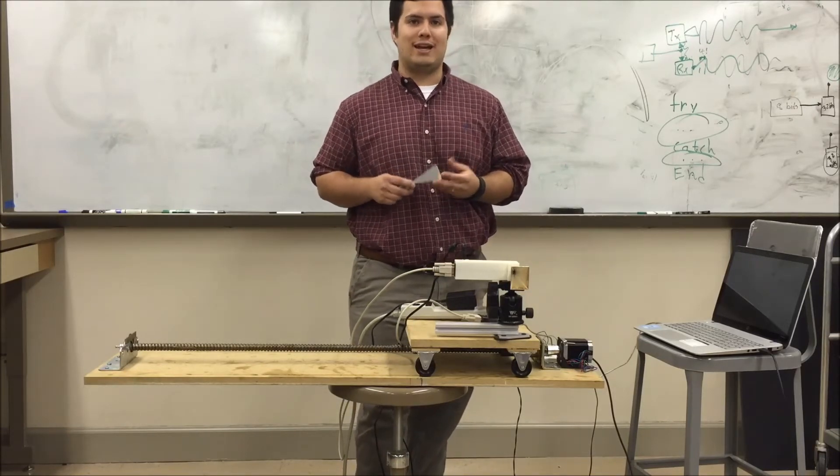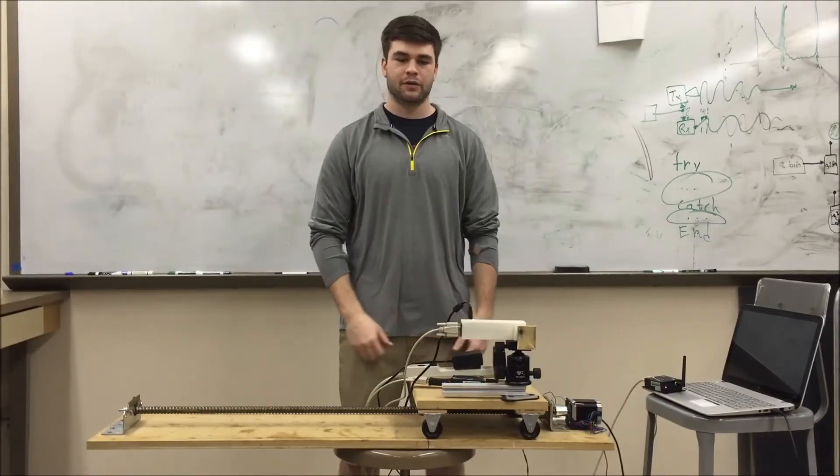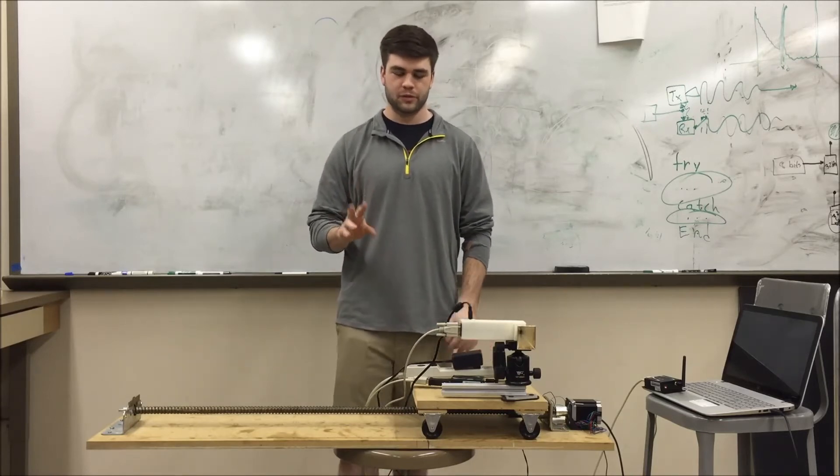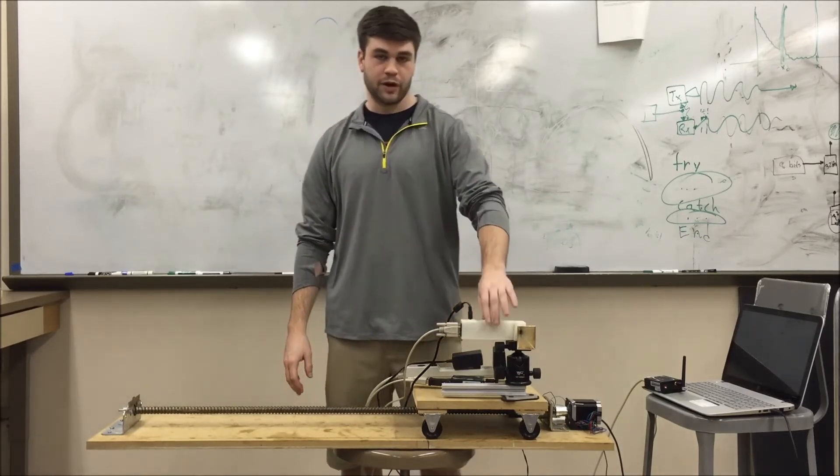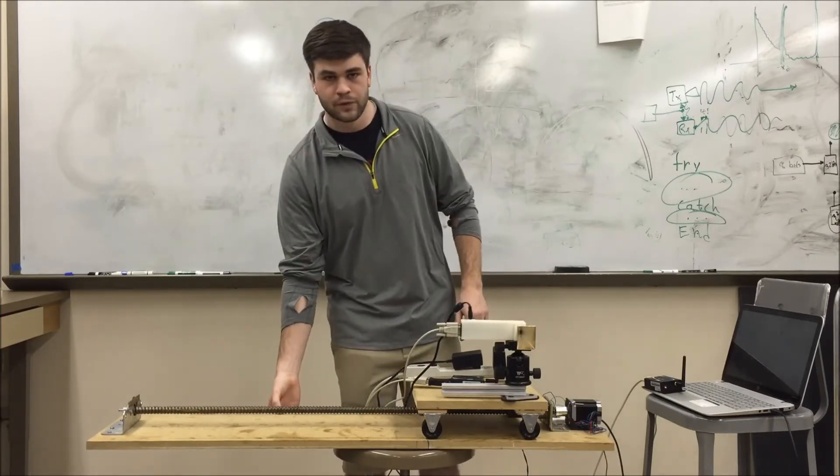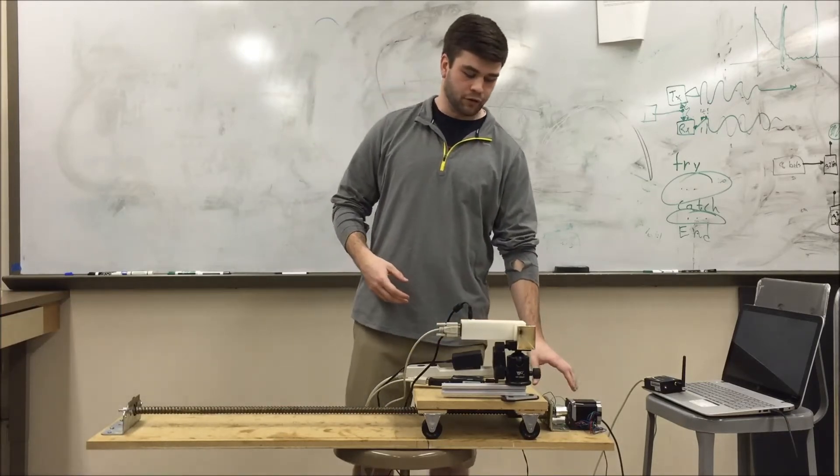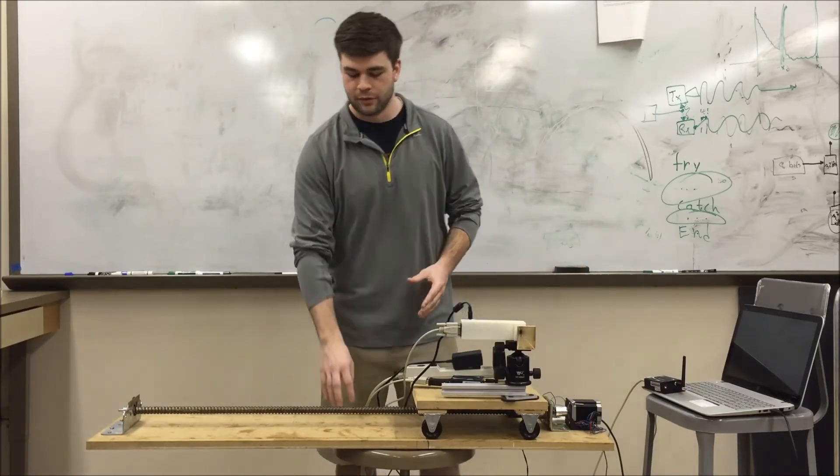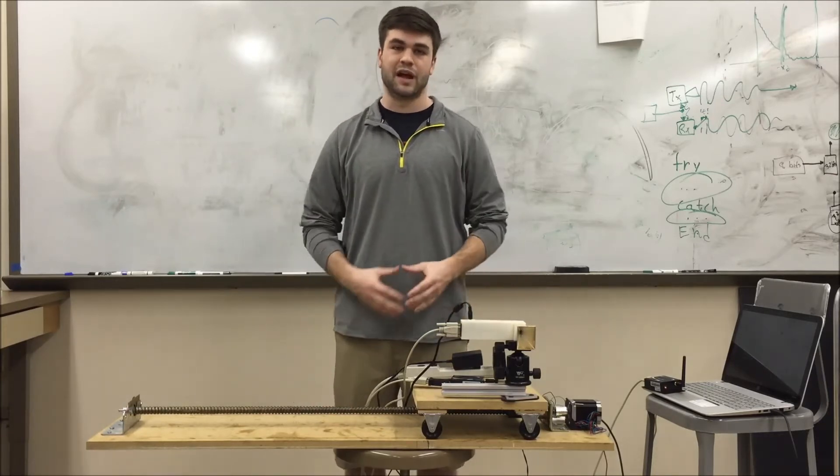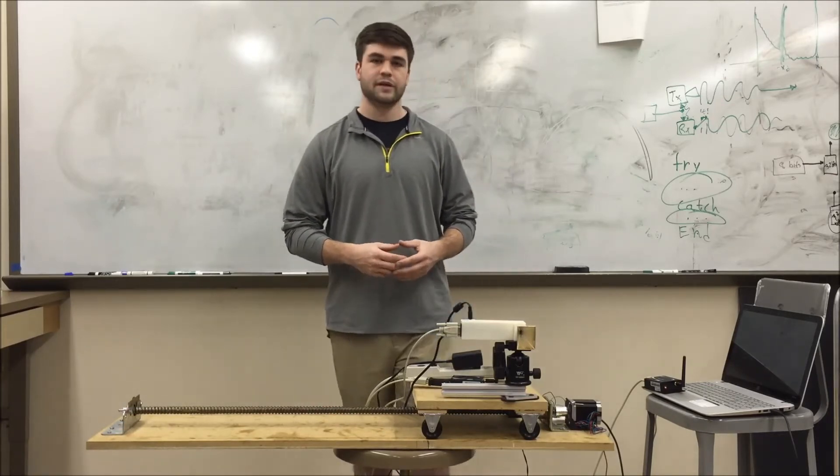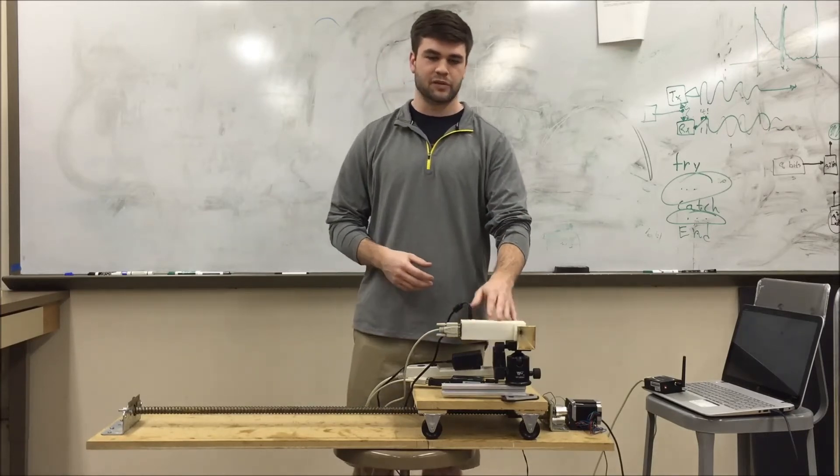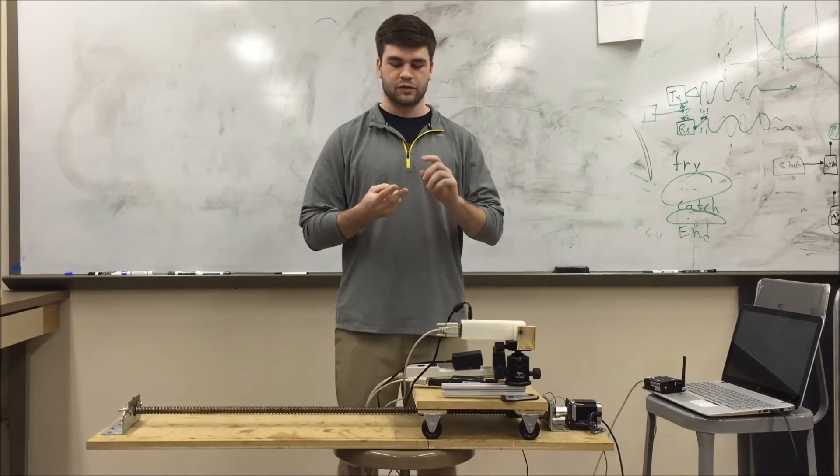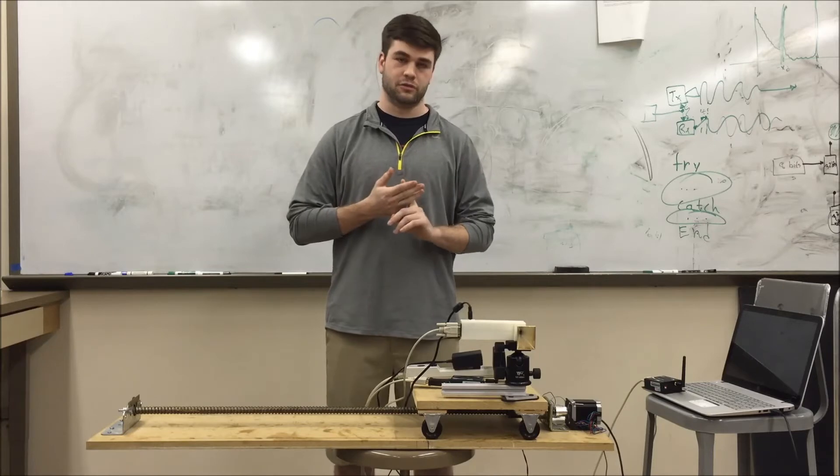To implement the wireless transmission part of our project, you first must realize there are two systems to this. First, there is the radar, and then there's the linear rail. The linear rail is controlled by Arduino and it requires a connection to the computer. But since the linear rail is a testing apparatus for the radar, we decided to not make it wireless. So to make the radar system wireless, we wanted three things: capable of long transmissions, discreet, and capable of high transmission rates.